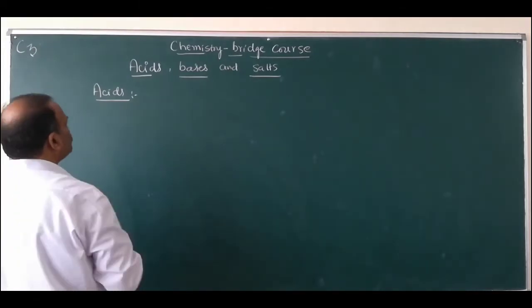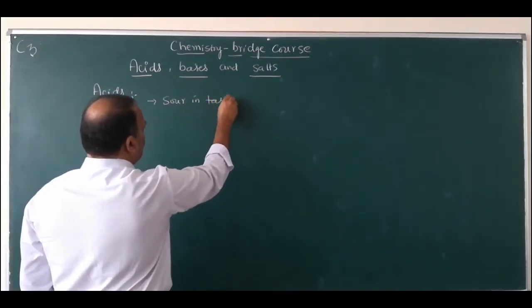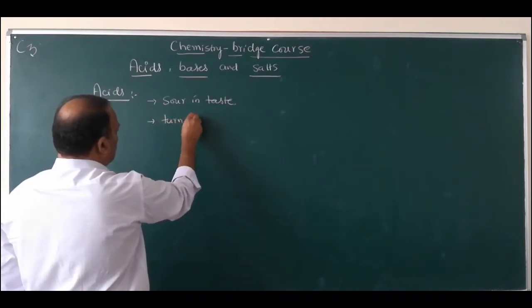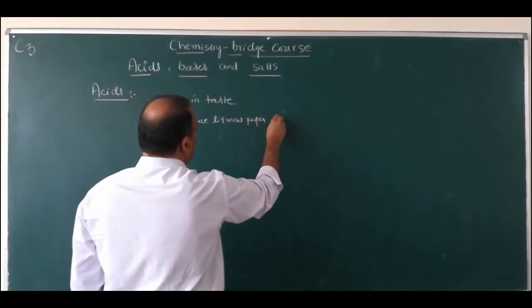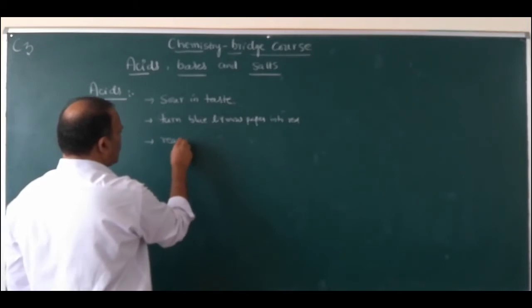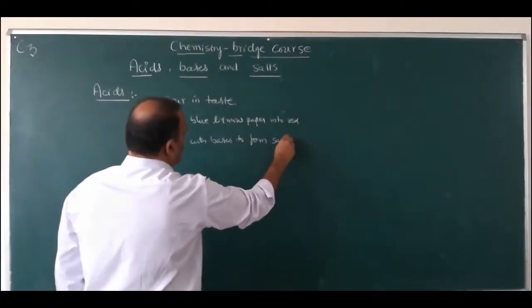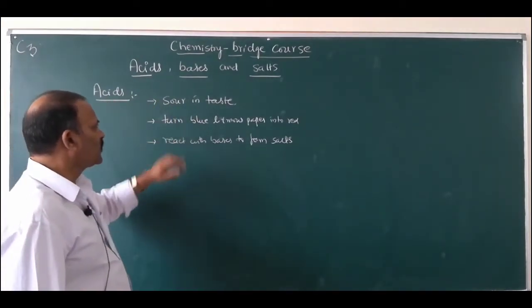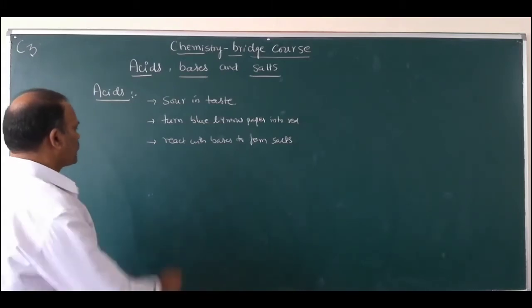What is an acid? An acid is a substance which is sour in taste, turns blue litmus paper into red, and reacts with bases to form salts.